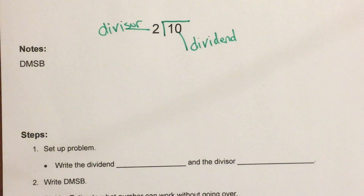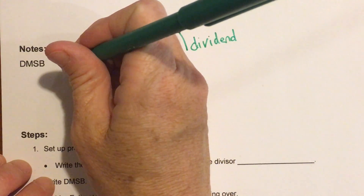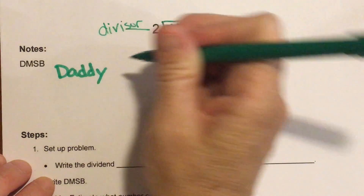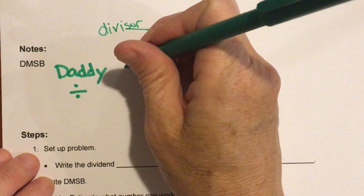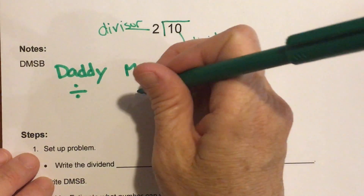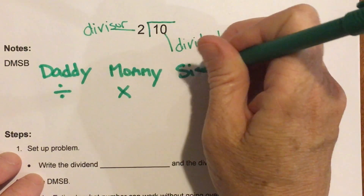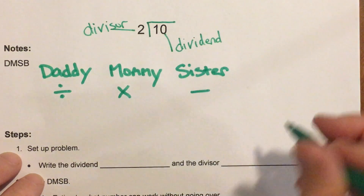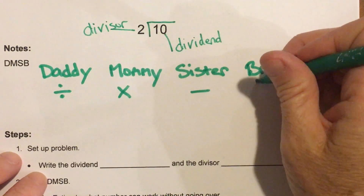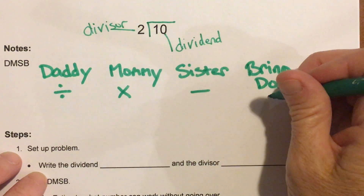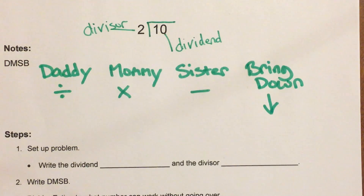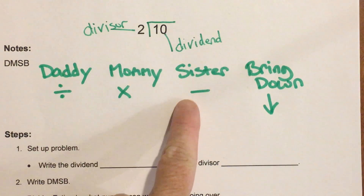My notes today use the acronym D-M-S-B, which we refer to as daddy, mommy, sister, brother. This is a little trick to help you remember how to follow the algorithm. D stands for daddy, which means divide. M stands for mommy, which means multiply. S stands for sister, which means subtract. And B stands for brother, which means bring down — we'll use an arrow for that. Divide, multiply, subtract, bring down.